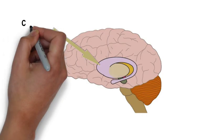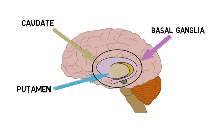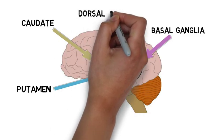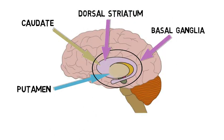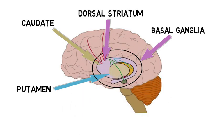The striatum is one of the principal components of the basal ganglia, a group of structures best known for their role in facilitating movement. The dorsal striatum is one of the primary input areas for the basal ganglia, and fibers from the cerebral cortex, substantia nigra, and thalamus all enter the basal ganglia via the dorsal striatum.